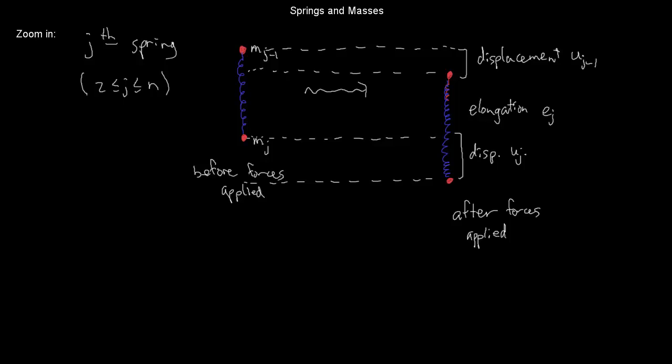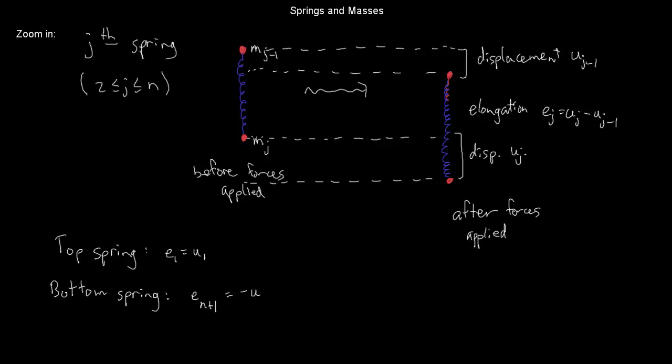If I look at the displacement of the j minus first mass, I want to name that displacement — let's call it u sub j minus one. Similarly, the displacement of the jth mass is u sub j. From u sub j and u sub j minus one, you can determine the elongation of the spring — it's just the difference: the displacement of the jth mass minus the displacement of the j minus first mass. For the top spring, the elongation is exactly the displacement of the first mass. The last elongation is just minus the displacement of the last mass.